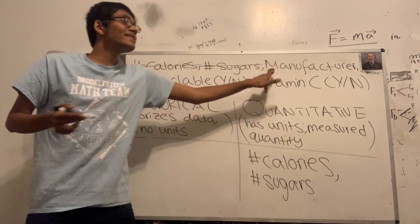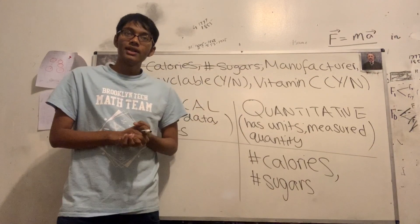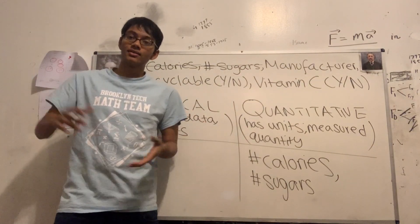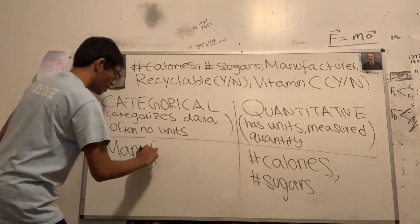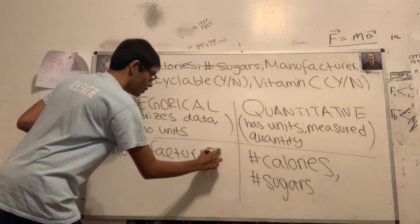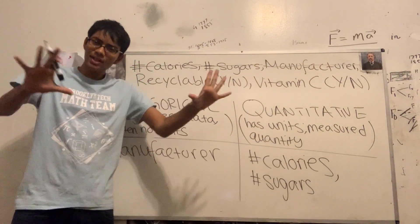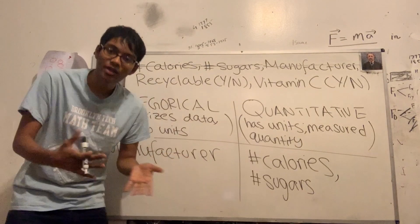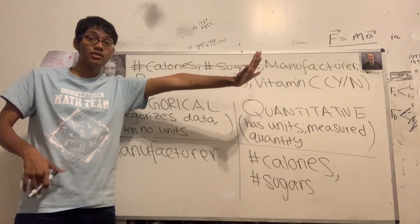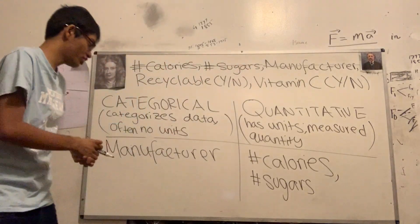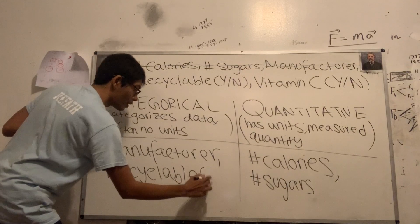Next up is the manufacturer. As you can probably guess, that's going to be categorical — it could be, I don't know, Nike or Target, something like that. So manufacturer falls under categorical. Moving on to recyclable — yes or no. Typically when you have yes or no questions, that's always going to be categorical. Is it recyclable? Yes — it falls under this column. No — it falls under that column. So recyclable or not falls under categorical.